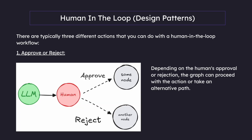Here is a very simple diagram. We have a node here, another node here, and then some other nodes. Right here the human can decide if the flow needs to go to this particular node or another node. Depending on the human's approval or rejection, the graph can proceed with the action or take an alternative path.